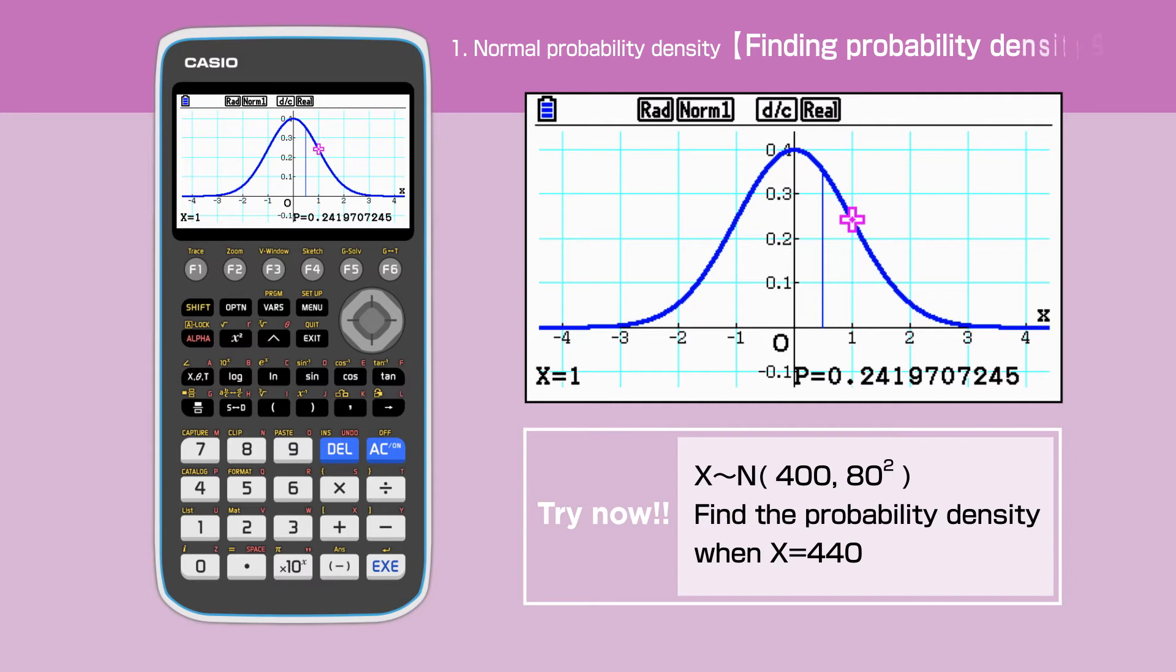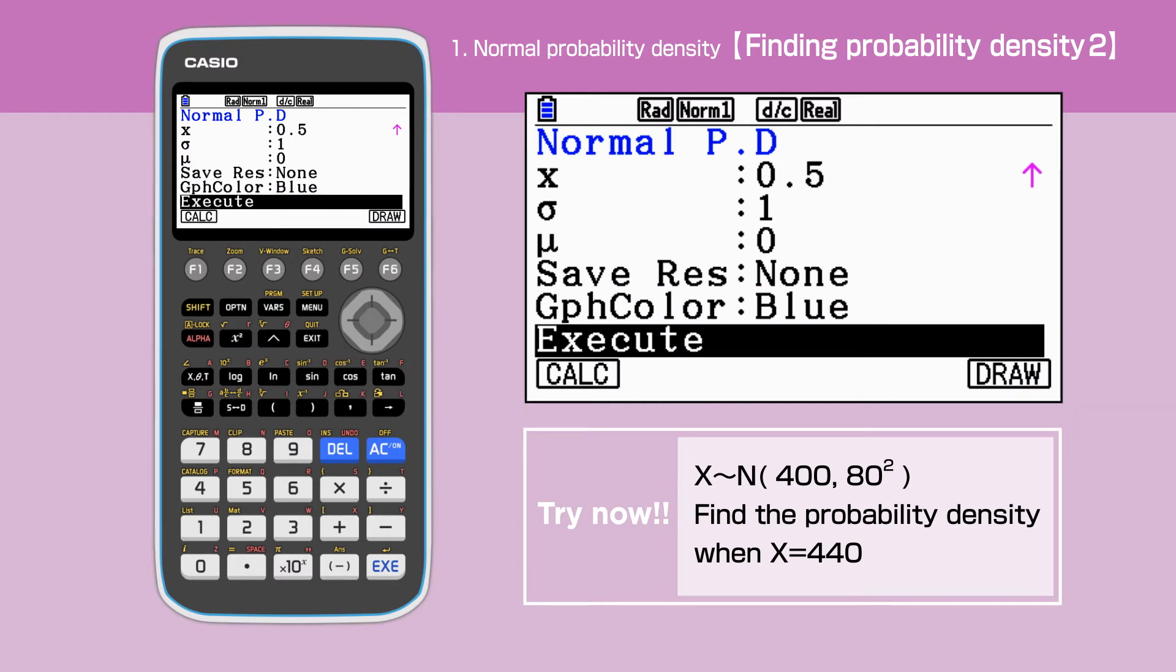Let's work out the value of probability density in a different question setting. X is a random variable that is normally distributed with mean 400 and standard deviation 80. Find probability density when x is 440.